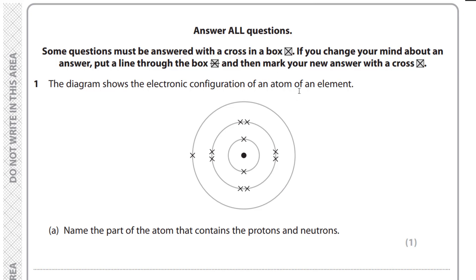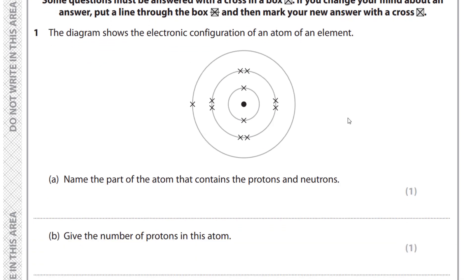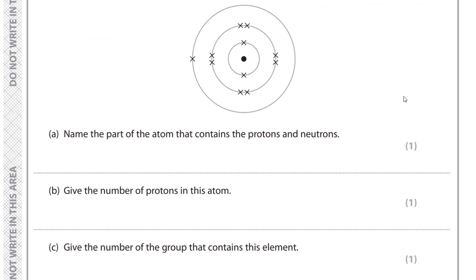As you can see, at the middle we have the nucleus, then we have the first energy level with two electrons, followed by eight electrons in the second energy level, and in the third energy level we have only one electron.